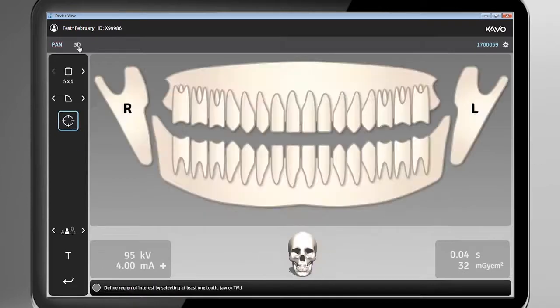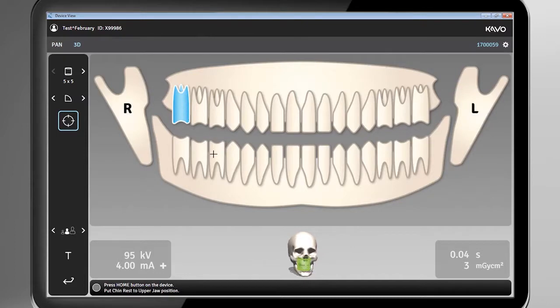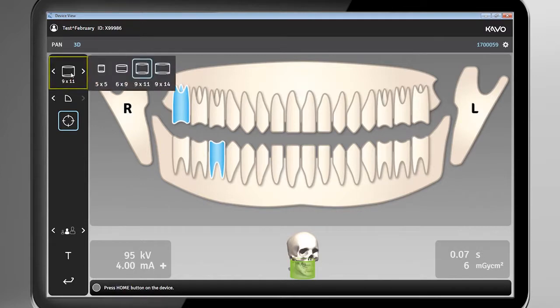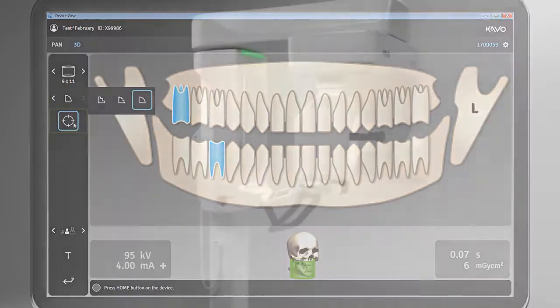With the 3D imaging program selected, you can select the region of interest for the 3D scan. This will automatically change the field of view according to your selection. The field of view size display and selector, the image resolution selector, and the scout image program.